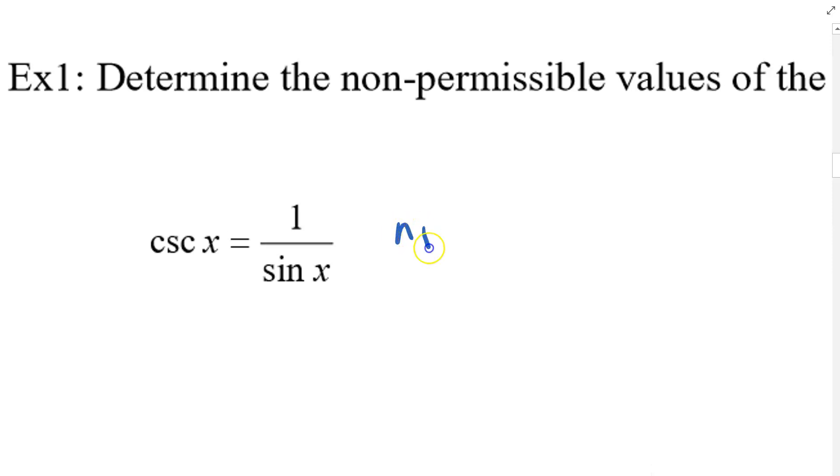So we're going to have a non-permissible value, or NPV for short, when sine of x is equal to zero. Let me think about that, make a little unit circle here.